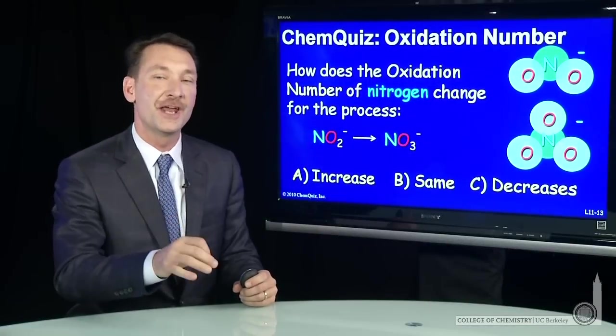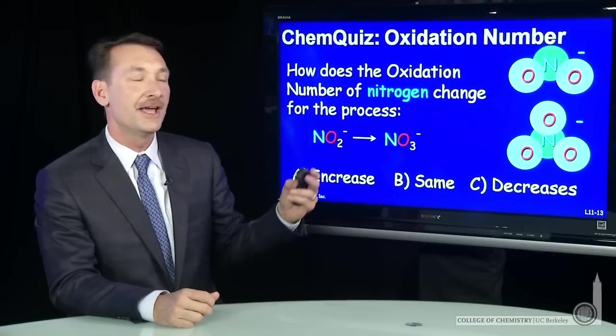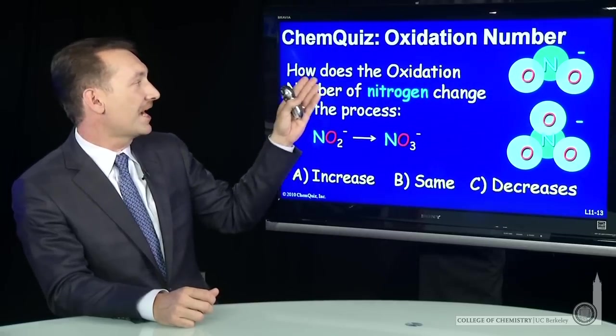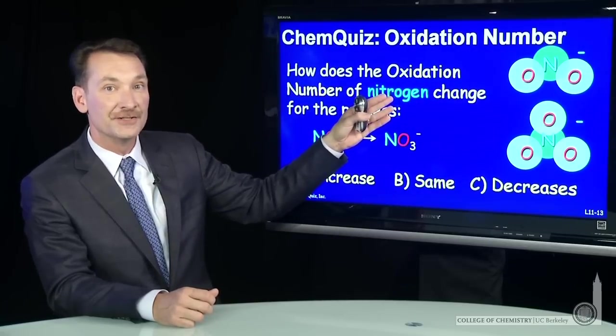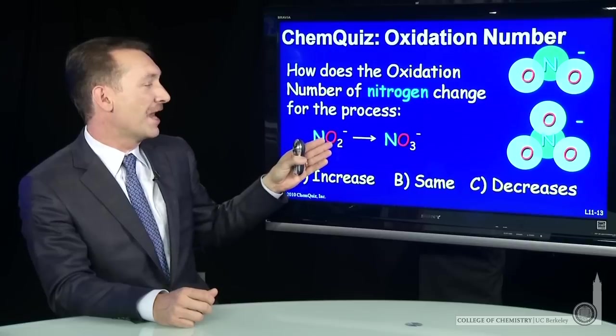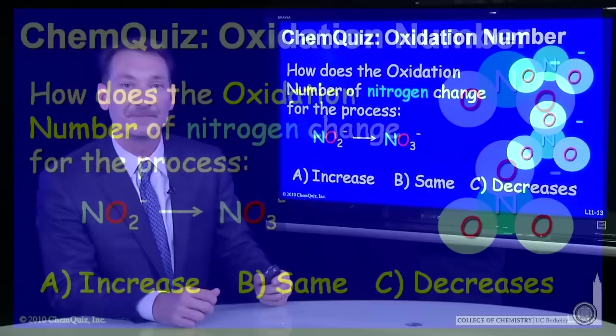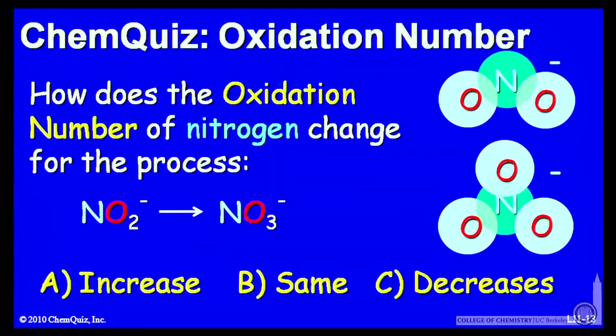Let's look at that NO2- to NO3- reaction, and this time think about the oxidation number change. So how does the oxidation number of nitrogen change in the transition from NO2- to NO3-? Does it increase, decrease, or stay the same? Think about that for a minute and make a selection.